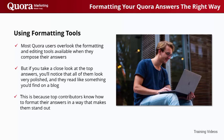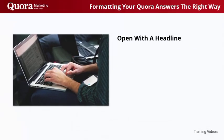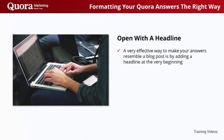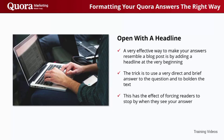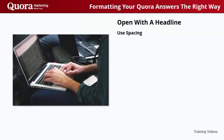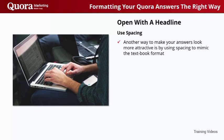It all comes down to using the formatting tools at your disposal when you click on Answer to open the editing window. Open with a headline. A very effective way to make your answers resemble a blog post is by adding a headline at the very beginning. The trick is to use a very direct and brief answer to the question and to bolden the text. Then you'll simply have to follow up with the longer answer. This has the effect of forcing readers to stop by when they see your answer, and it also helps your answer stand out when you're not the first to reply. Use spacing. Another way to make your answers look more attractive is by using spacing to mimic the textbook format. You'll separate your text into paragraphs.